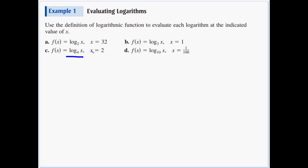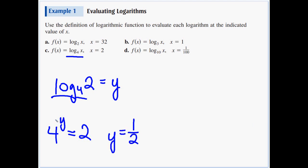Letter c: log base 4 of x when x is 2. Log base 4 of 2 equals y, so 4 to the y equals 2. What exponent would give us the same thing? Well, the square root of 4 is 2, so that would be y equals 1 half power. 4 to the half power would be the square root of 4, and that is equal to 2.